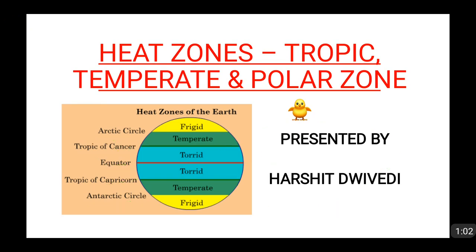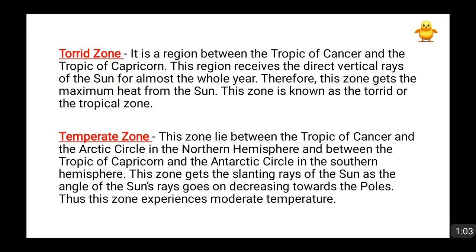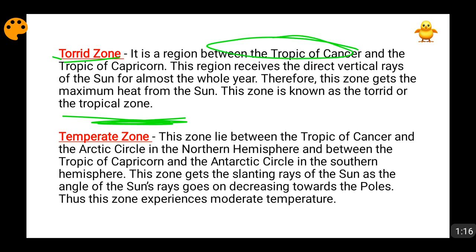Moving forward, first of all — the torrid zone. What is basically the torrid zone? This is also known as the tropical zone. Obviously, the region coming in between the tropics will be the torrid zone. So it is a region between the tropic of cancer and the tropic of Capricorn. The very important thing about this region is that it receives direct sunlight for almost the complete year, and that is why it receives the maximum heat.